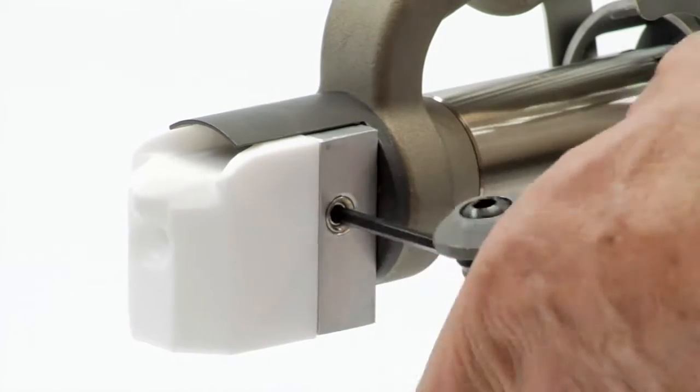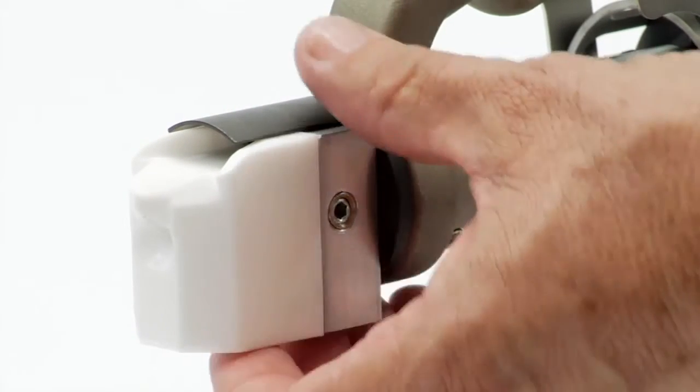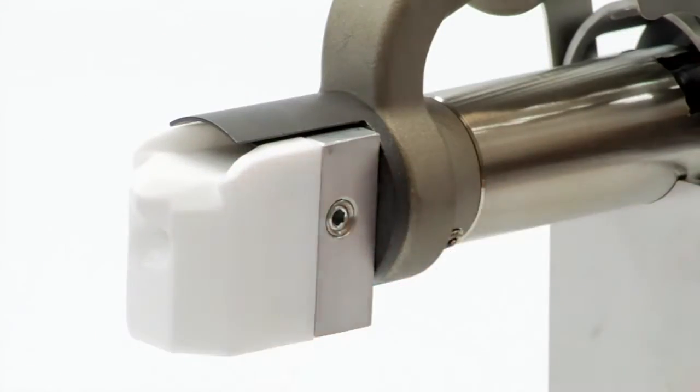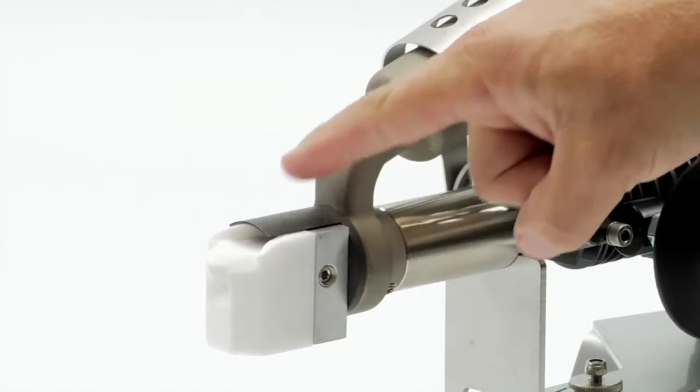The MAK18's nozzle can spin 360 degrees, allowing you to weld at any angle. Hot air from the preheat flows out by the Teflon shoe.